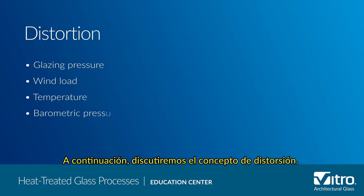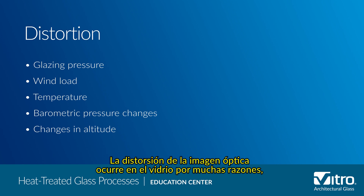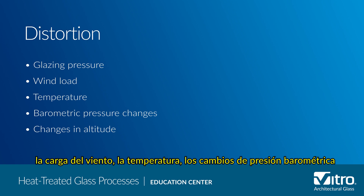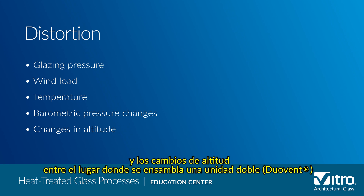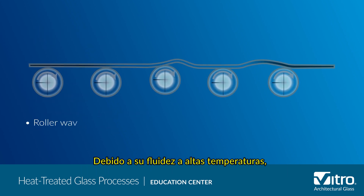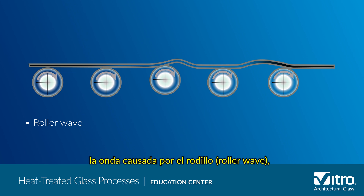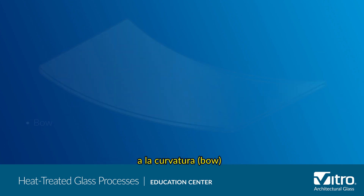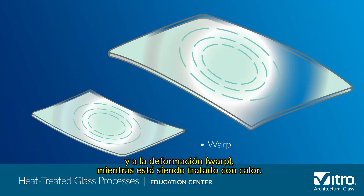Next, we'll discuss the concept of distortion. Optical image distortion occurs in glass for many reasons, including glazing pressure, wind load, temperature, barometric pressure changes, and changes in altitude between where an insulating glass unit is made and where it is installed. Because of its fluidity at high temperatures, glass is also susceptible to roller wave, bow, and warp while it is being heat treated.